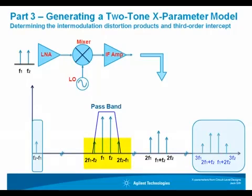However, some other third-order terms, such as the 2F1-F2 and the 2F2-F1 terms happen to fall very close to the signal in the passband of the system and cannot be filtered out. They bring trouble to the system and need to be accounted for and kept at lower power levels as compared to the main receive signal in the passband.